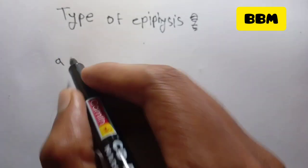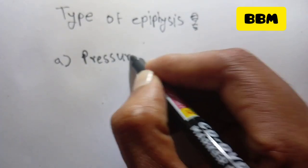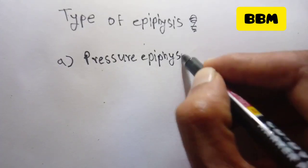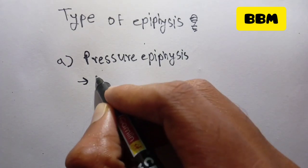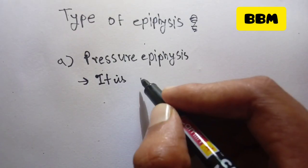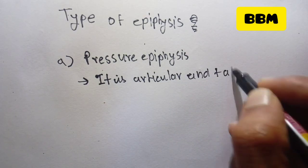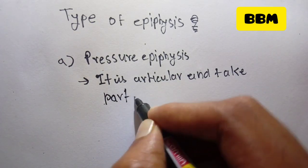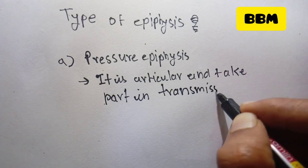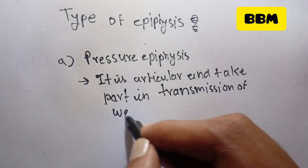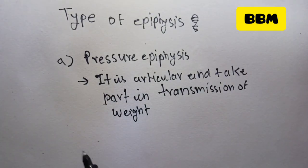The first type is Pressure Epiphysis. Pressure Epiphysis is articular and takes part in the transmission of weight.